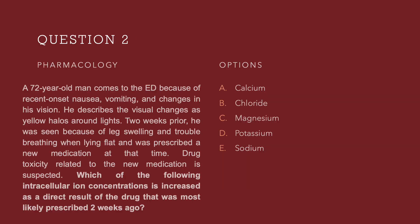Let's look at question number 2. Which of the following intracellular ion concentrations is increased as a direct result of the drug that was most likely prescribed two weeks ago? A 72-year-old man comes to the emergency department because of recent onset nausea, vomiting, and changes in his vision. He describes the visual changes as yellow halos around light. Two weeks prior, he was seen because of leg swelling and trouble breathing when lying flat, and was prescribed a new medication. Drug toxicity related to the new medication is suspected. The options are: calcium, chloride, magnesium, potassium, sodium. Let's take a 10-second pause.